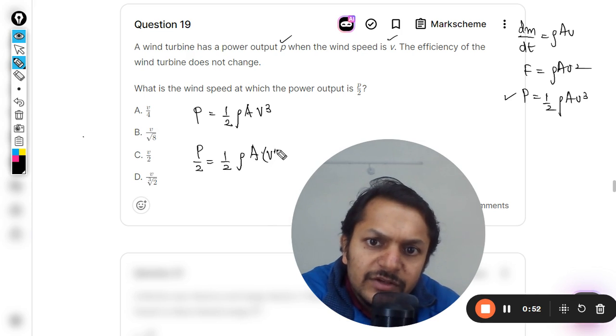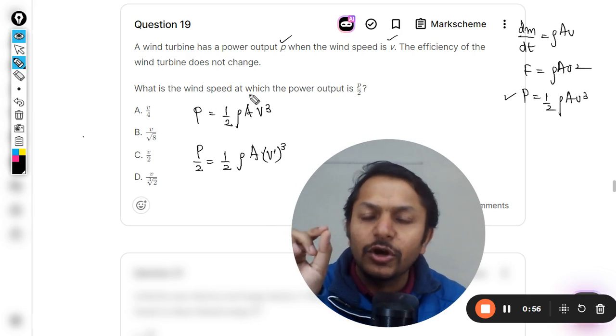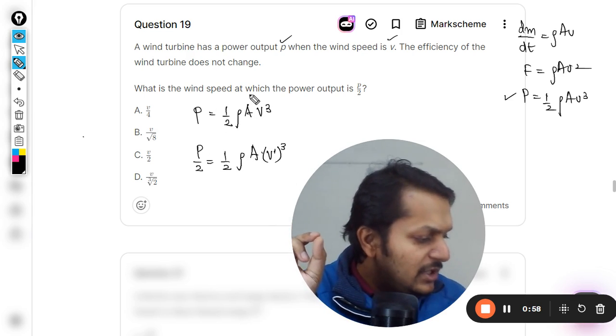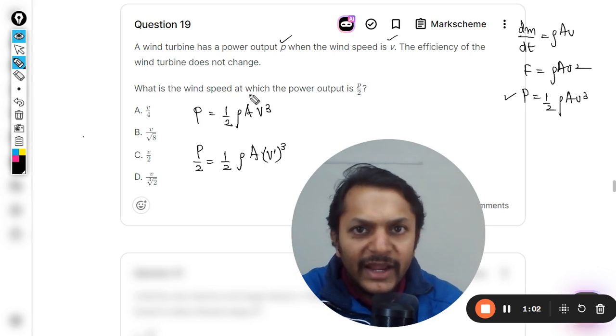Now you see area is the same because you are actually talking about the same wind turbine, so the area does not change. Density does not change because we are concerned with the same wind.